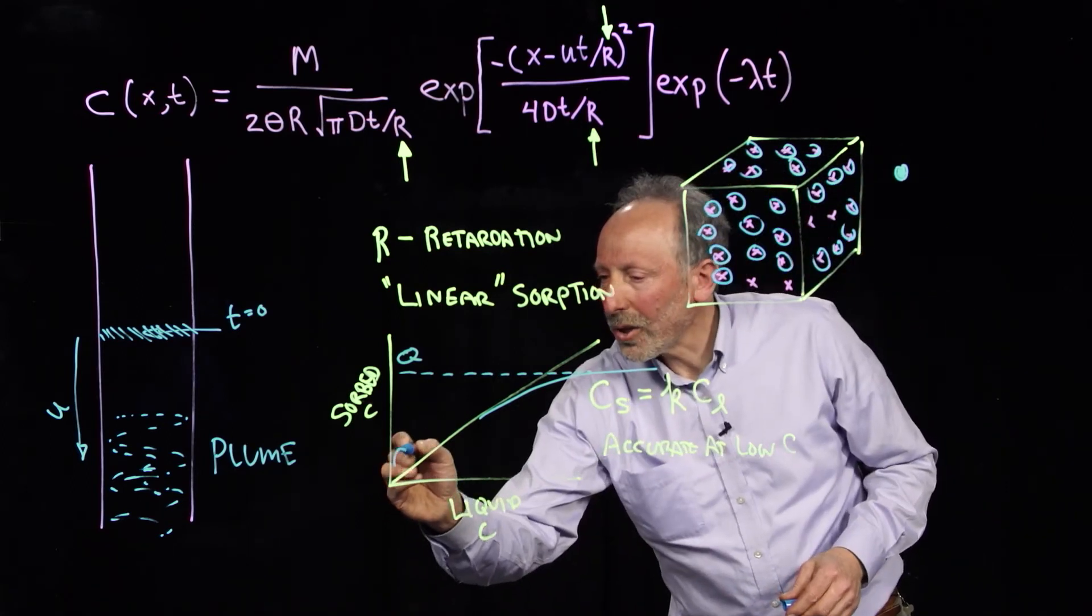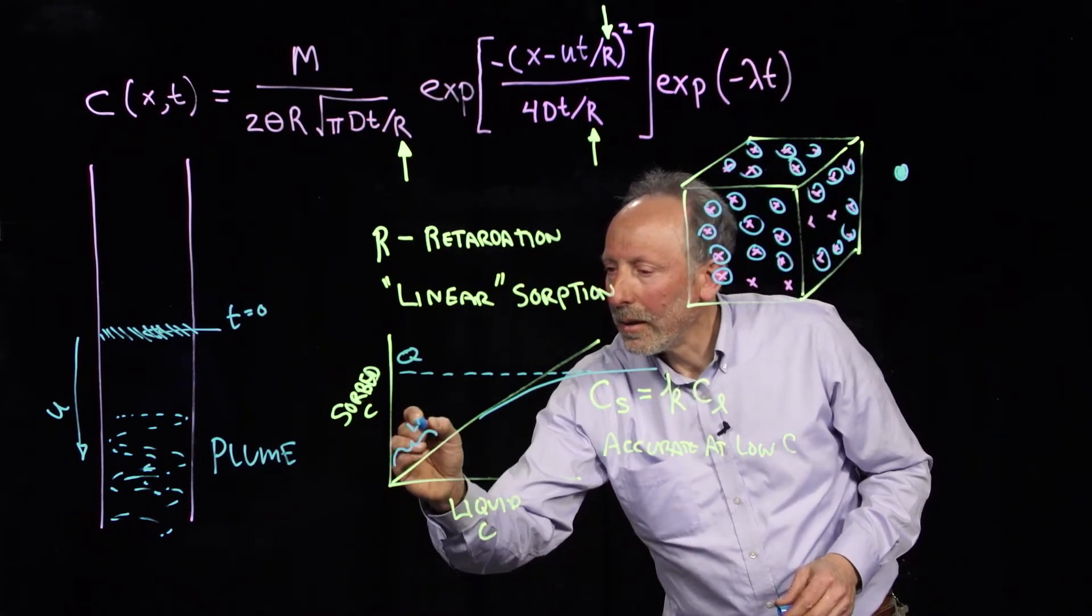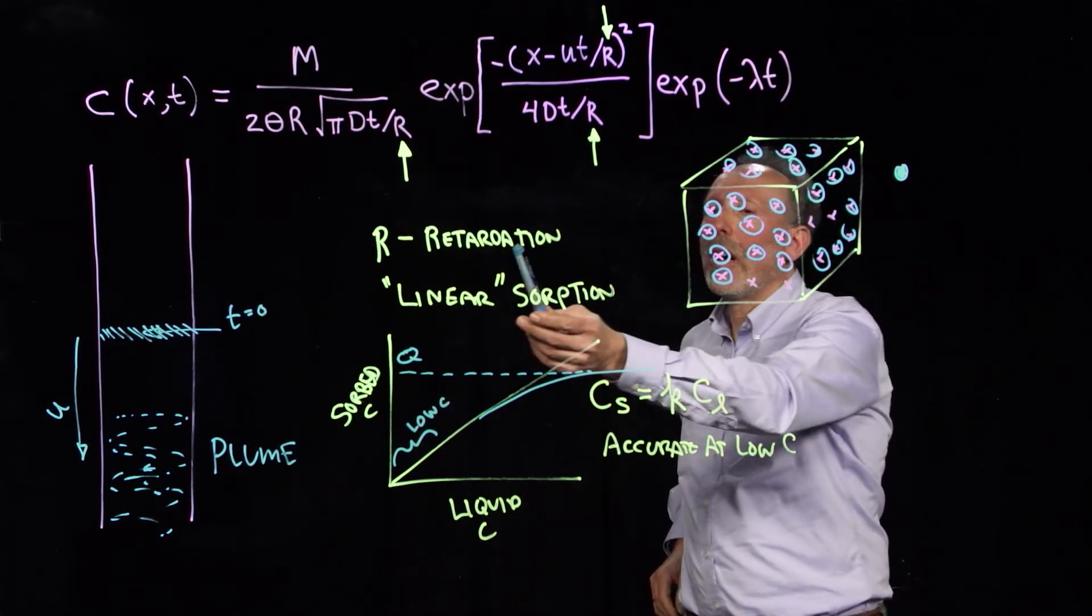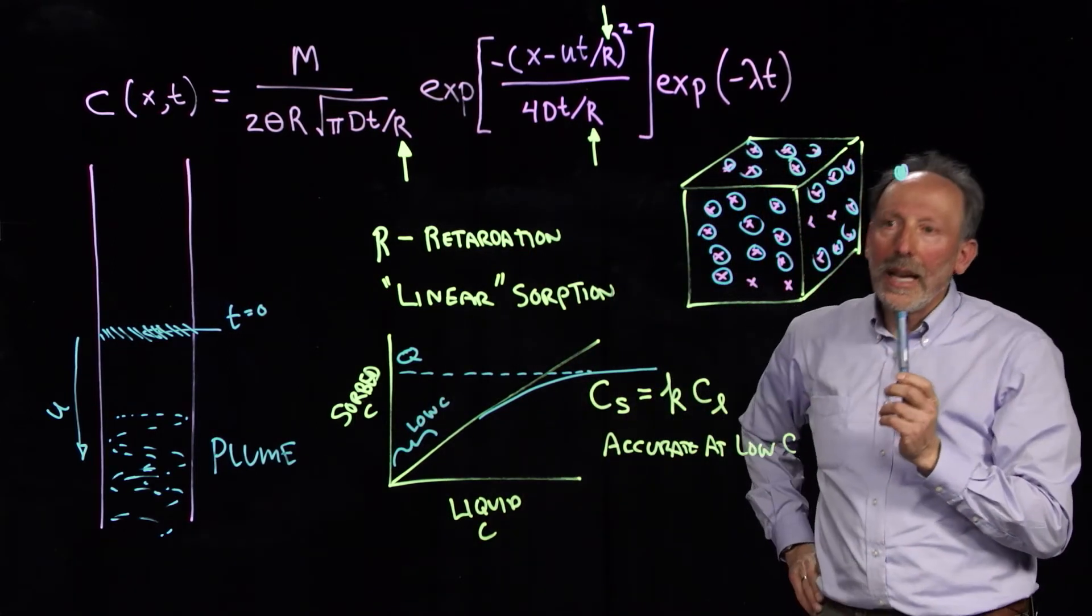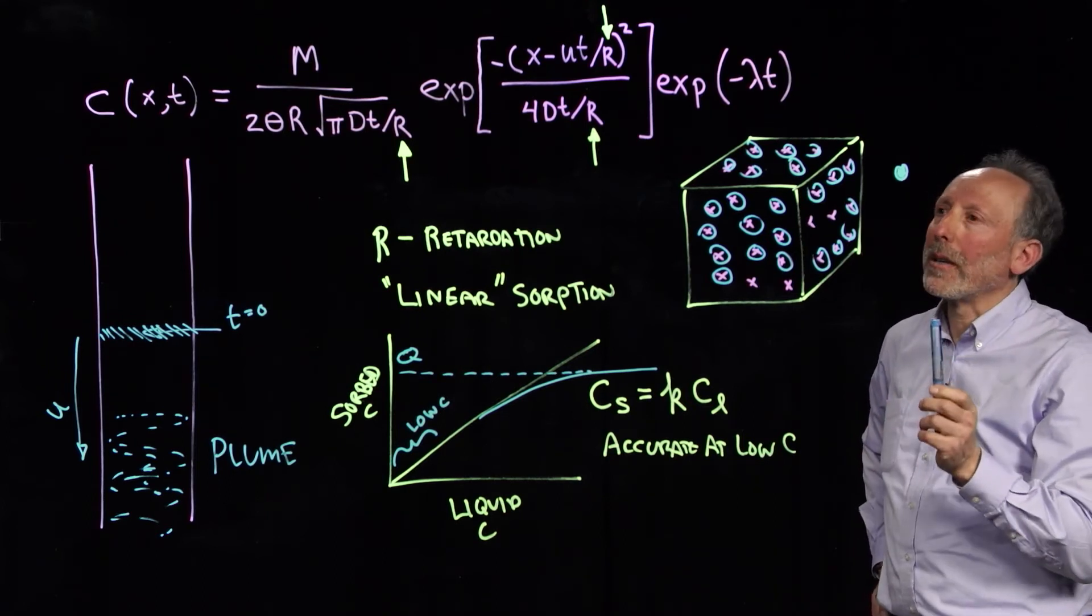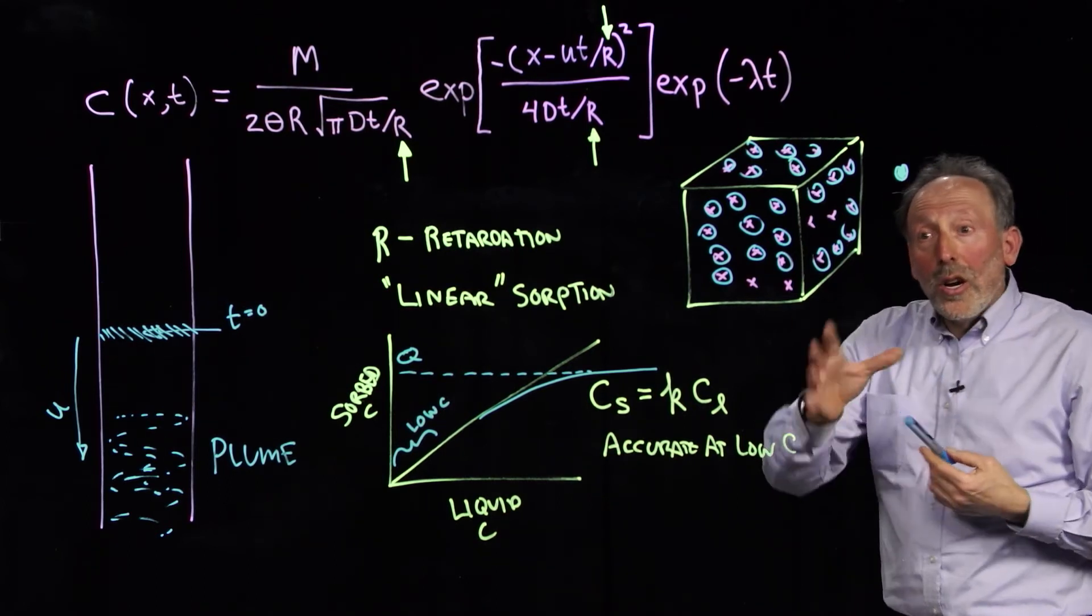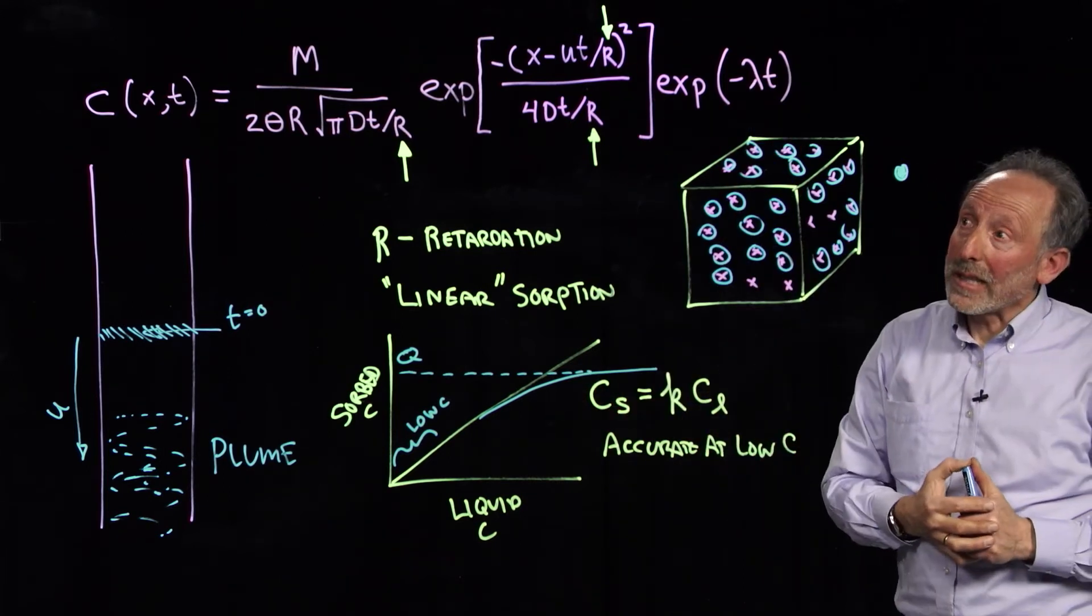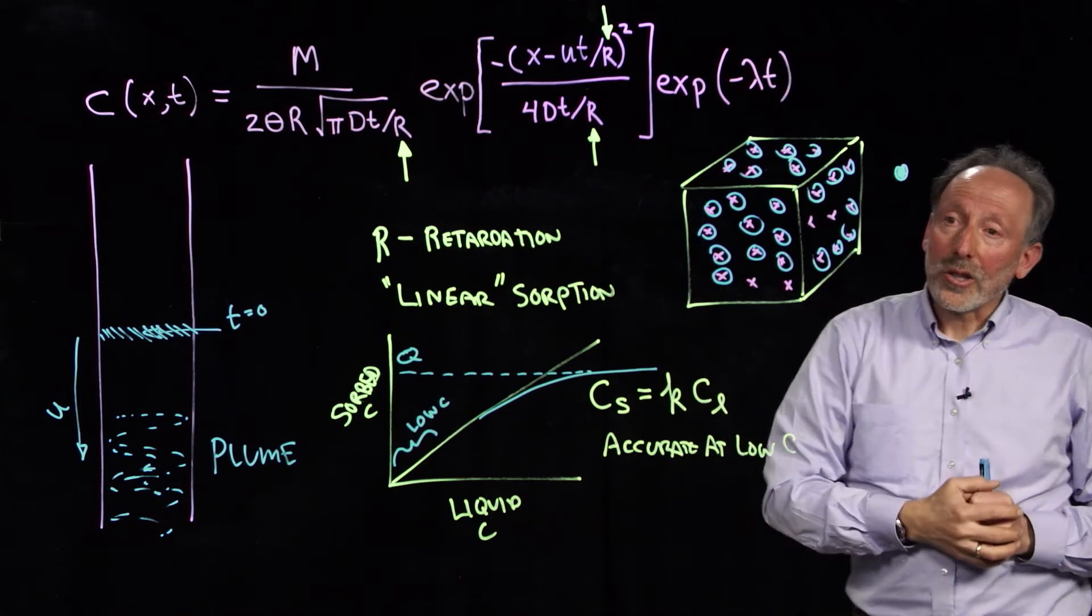So, when we're at the low concentration end, then we can work with this concept of retardation, and we can think about it as a linear process. This is very important, because when it goes to the non-linear stage, then all of the mathematics behind this changes drastically, and this idea of retardation is no longer suitable.